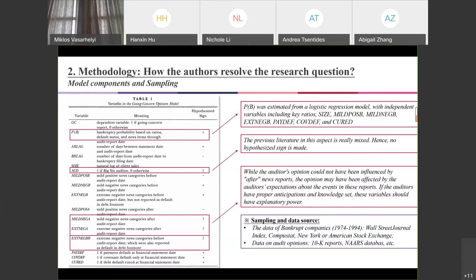As for the independent variables, we will mainly pay attention to the important predictors. The most important independent variable is the probability of bankruptcy. This variable was estimated from a logistic regression model with independent variables including key financial ratios, like the ratio of net income and total assets. It also includes other variables like size, mild positive events before the audit report date.